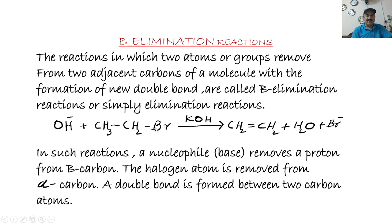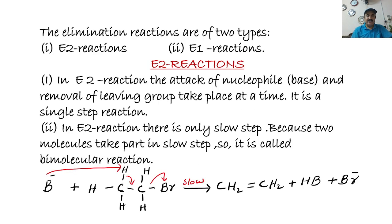In such reactions the nucleophile, which acts as a base, removes a hydrogen from the beta carbon. The carbon nearest to the halogen is called the alpha carbon, and the carbon next to that is called the beta carbon. So the base removes a proton from the beta carbon, the halogen atom is removed from the alpha carbon, and a double bond is formed between the two carbon atoms.